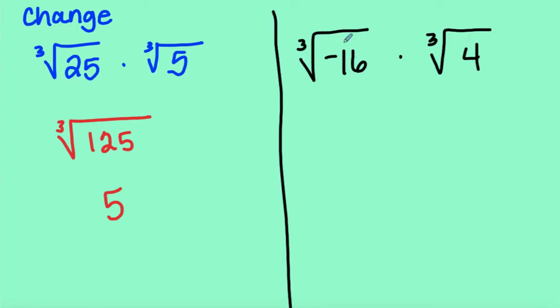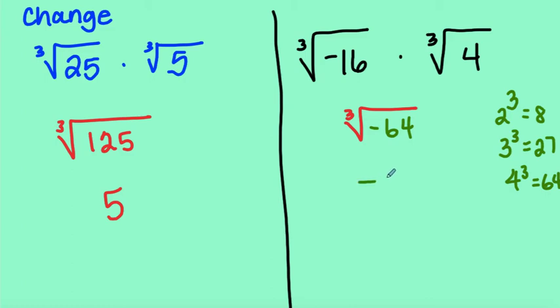Last one. Here we've got the cubed root of negative 16 times the cubed root of 4. The indexes are the same, so we can multiply. That's going to give me the cubed root, make sure you put that index in, of negative 64. So I ask myself, is 64 a perfect cube? Let's go through our cubes: 2 cubed is 8, 3 cubed is 27, and 4 cubed is 64. But this one's negative, so the answer when we evaluate it or simplify it would be negative 4.